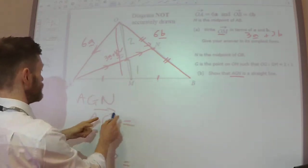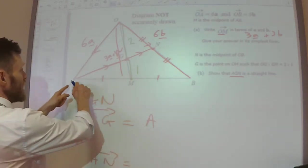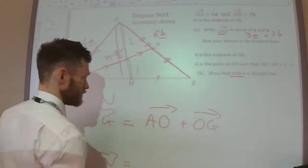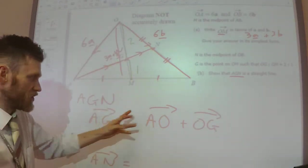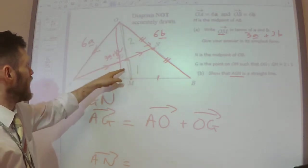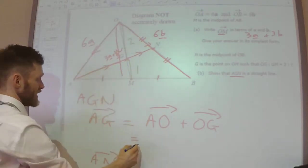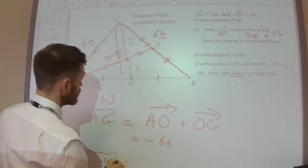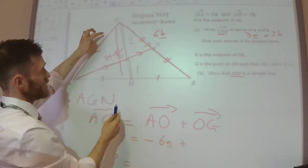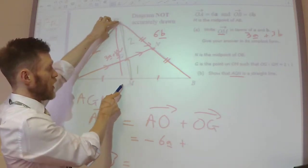So, A to G. Well, to do A to G, I'm going to combine the vectors A to O and O to G. The resultant of these two vectors will give me A to G. A to O, I know that that is minus 6a. And then I want O to G. Now, O to G, that's two parts of this O to M.